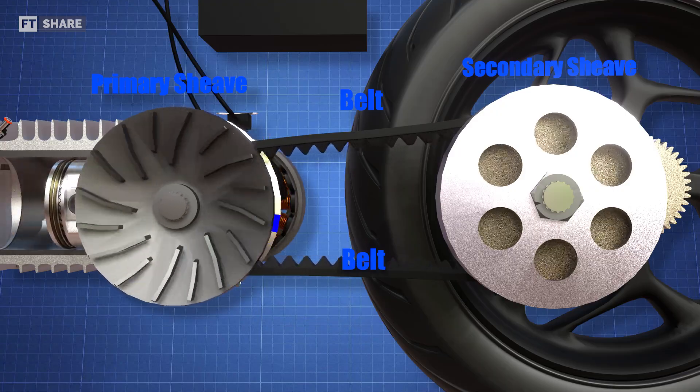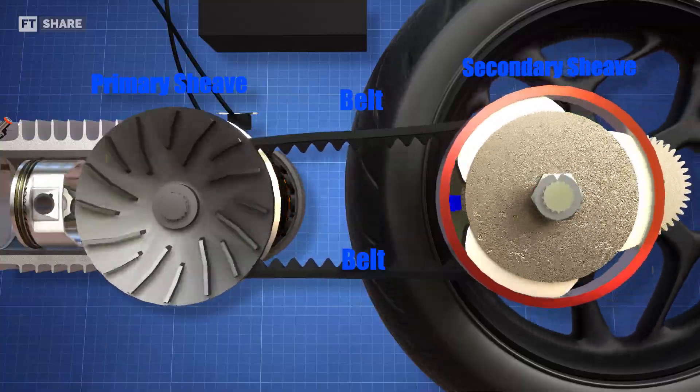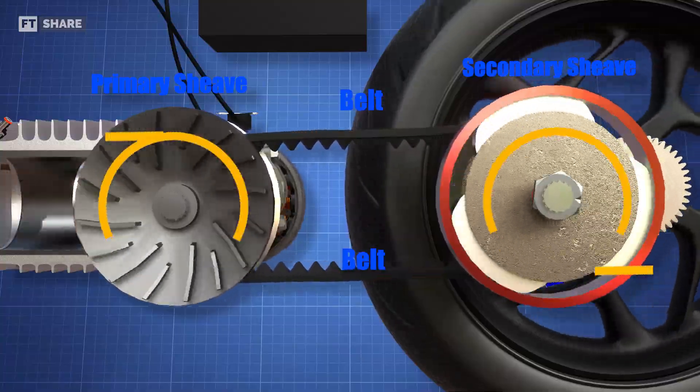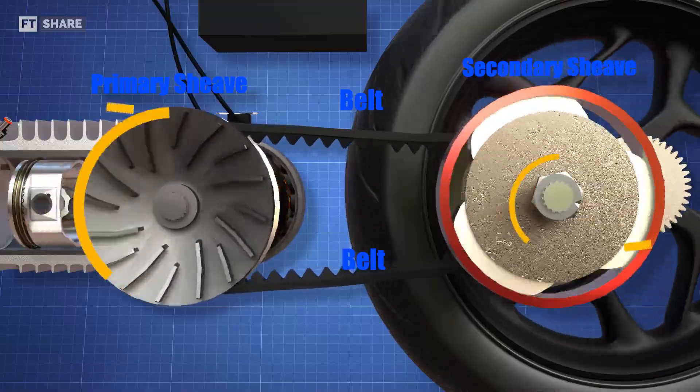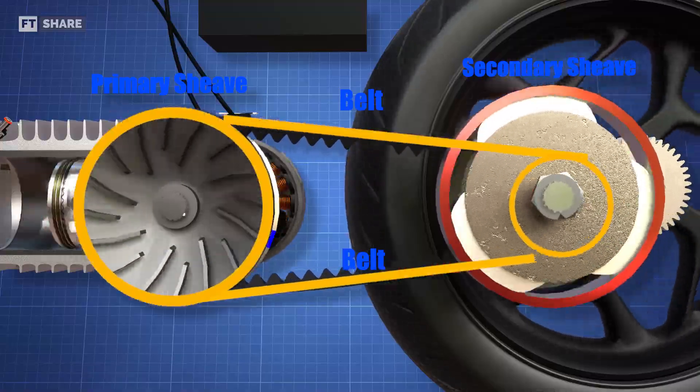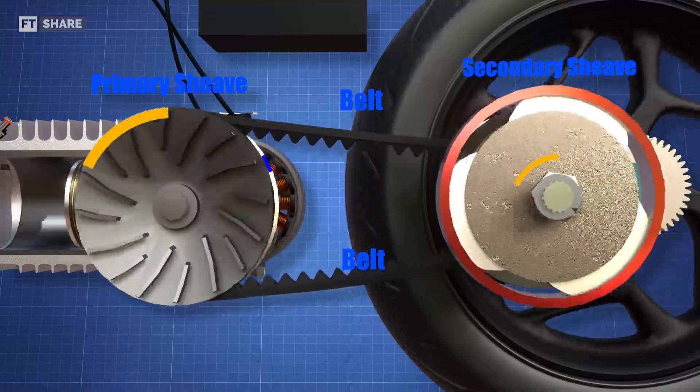When sufficient speed is reached, centrifugal force causes the arms to swing outward, and the friction linings come into contact with the clutch housing. This clutch housing functions to transfer power through the gear train to the rear wheel until it reaches the scooter wheel.